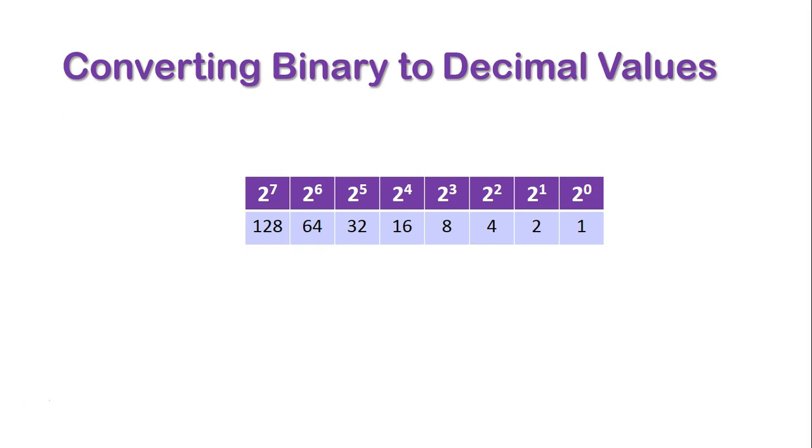On the far right we have 2 to the power of 0 which equals 1, and then following that to the left we have 2 to the power of 1 which equals 2, 2 to the power of 2 which equals 4, 2 to the power of 3 which equals 8, 2 to the power of 4 which equals 16, 2 to the power of 5 which equals 32, 2 to the power of 6 which equals 64, and 2 to the power of 7 which equals 128.